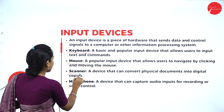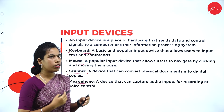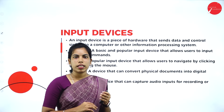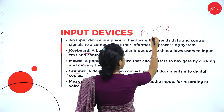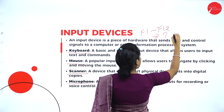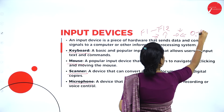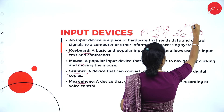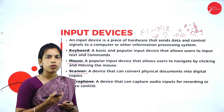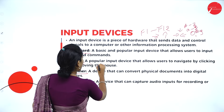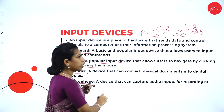The input devices include keyboard, mouse, scanner, microphone, and many more. The keyboard is a basic and popular input device that allows the user to input text and commands into the computer. It has function keys F1 to F12, arrow keys (up, down, left, right), number keys 0 to 9, and alphabetic keys A to Z in both upper and lower case. The mouse is a pointing device - a popular input device that allows the user to navigate, click, and move in the window.